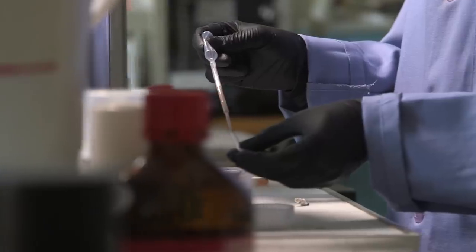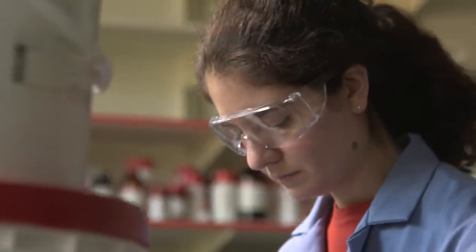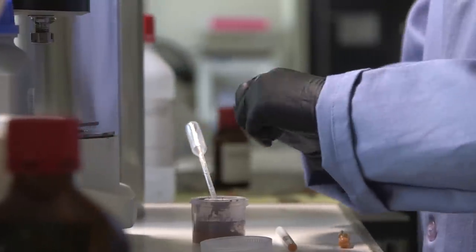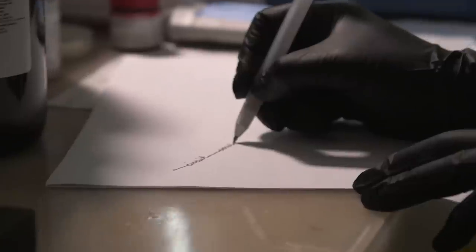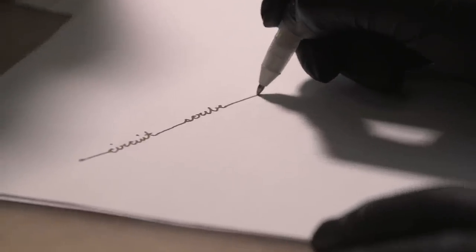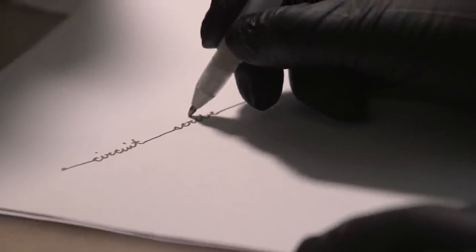We have the prototype completed and now we want to get Circuitscribe out to consumers. We've found a company that will help us design and manufacture the first batch of pens, but we need your help to fill that order. If we pass our goal, we can develop more products like resistor and insulator pens and get Circuitscribe into stores and classrooms.